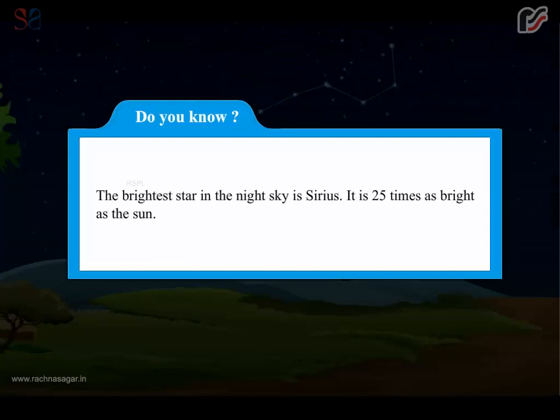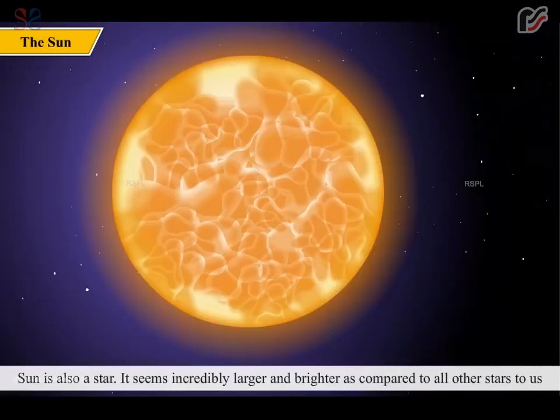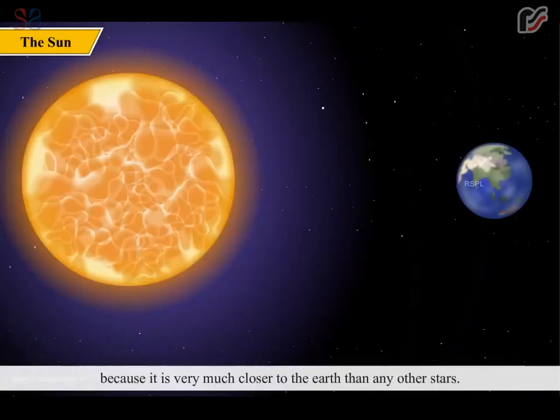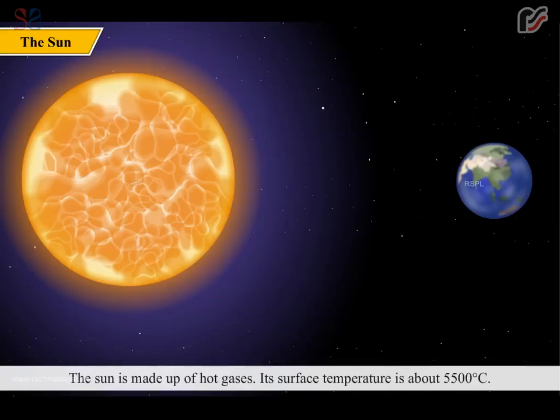Do you know? The brightest star in the night sky is Sirius. It is 25 times as bright as the Sun. The Sun is also a star. It seems incredibly larger and brighter compared to all other stars because it is very much closer to the Earth. The Sun is made up of hot gases. Its surface temperature is about 5500 degrees Celsius.